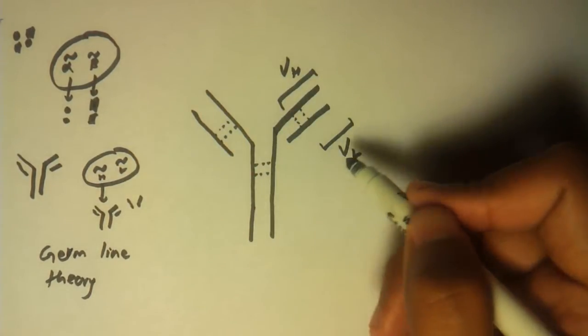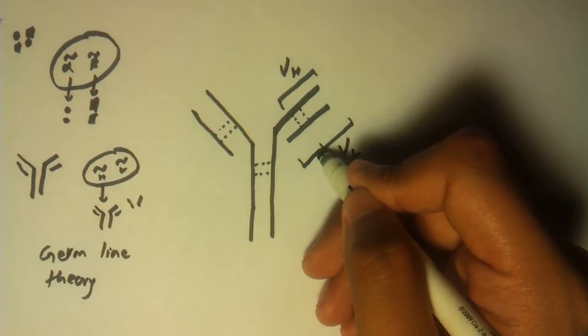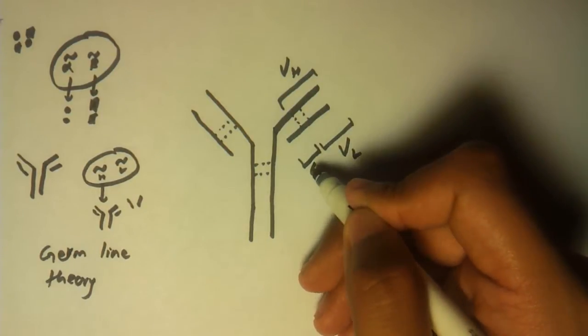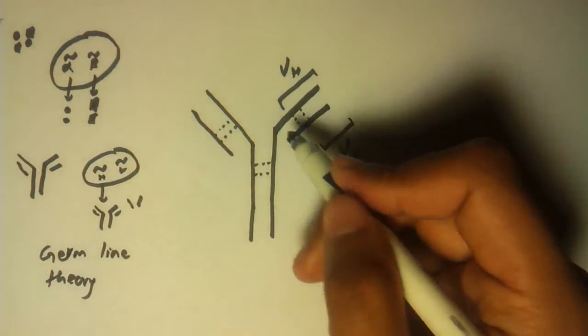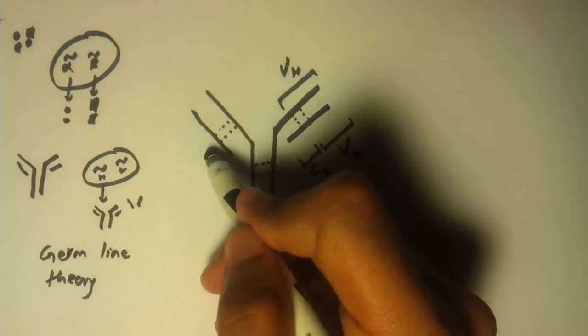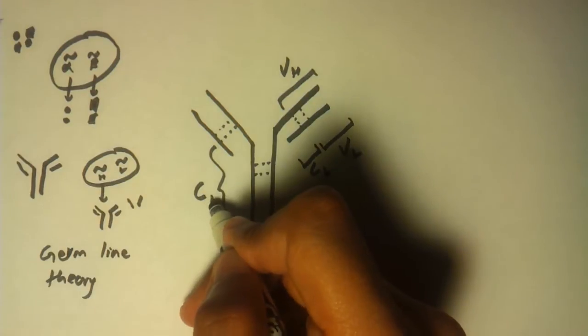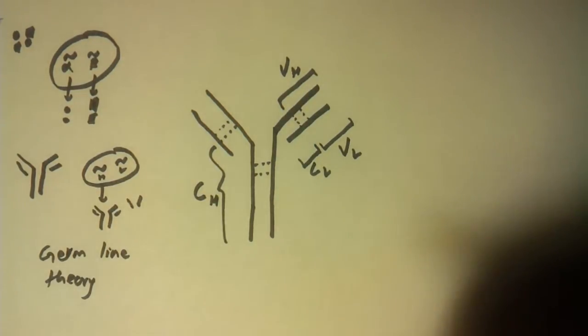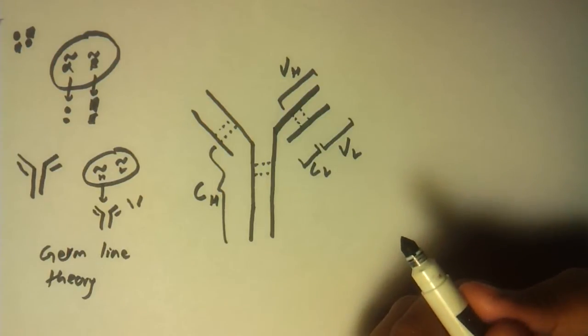Now this remaining part of light chain, we call it CL—C is for constant region of light chain. And same goes for heavy chains. So for heavy chain, maybe from here all the way up to here, we call it constant region of heavy chain, or CH.